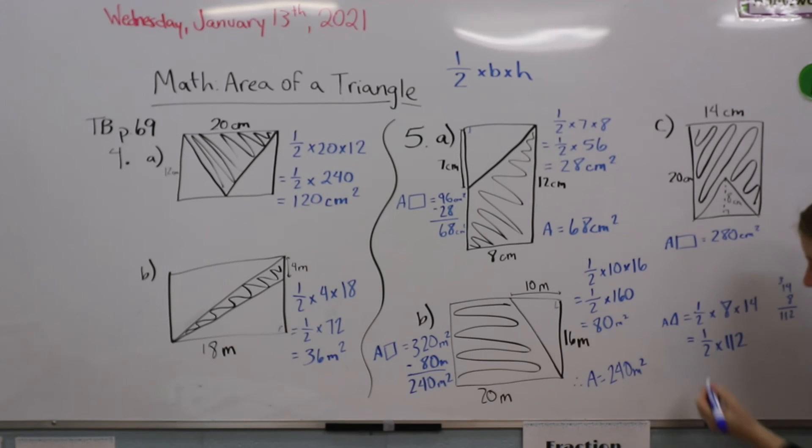So it's half times 112, which is going to give us 56, and again this is centimeters. Now we'll do our subtraction. So 280 minus 56 is 224.